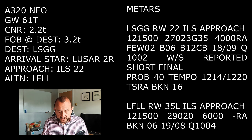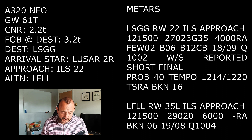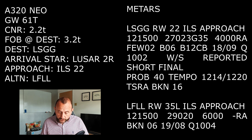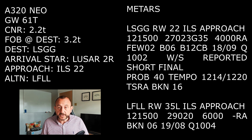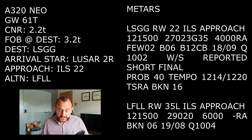The METAR at 1215 Zulu on the 12th: wind 270 at 23 gusting 35, 4000 metres in rain, few at 200 feet, broken at 600, broken CBs at 1200. Temperature 18, dew point 09, QNH 1002. Runway in use is 22. Wind shear is reported on short final. There's a PROB 40 tempo between 1214 and 1220 with thunderstorm and rain, broken at 1600 feet.